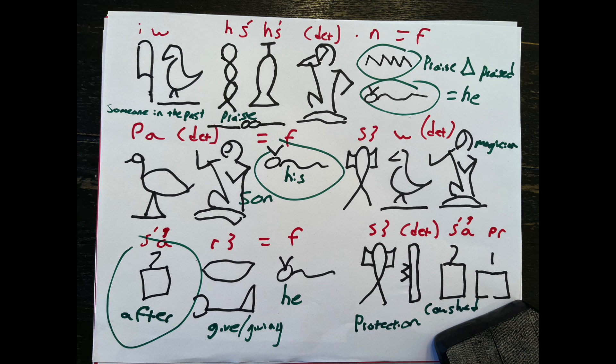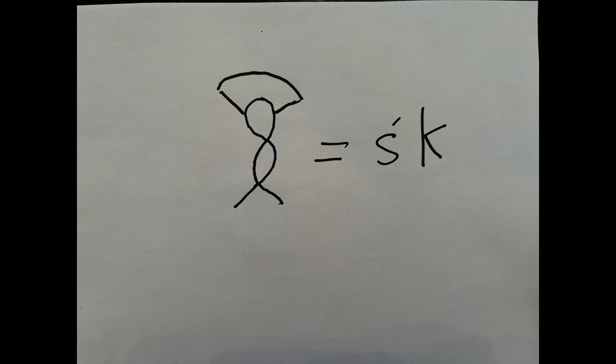Then we have the word protection followed by cow shed. So the whole thing in English would read, he praised his son, the magician, after giving him protection of the cow shed or near the cow shed. I guess we could have put another preposition in there, but it still reads. I didn't want to make it too complicated.